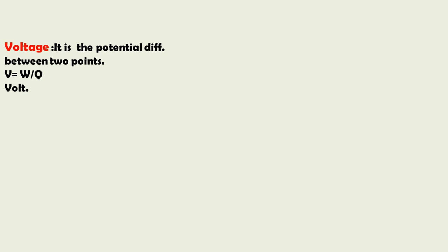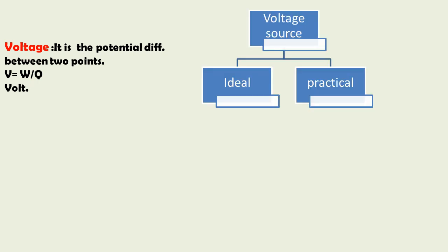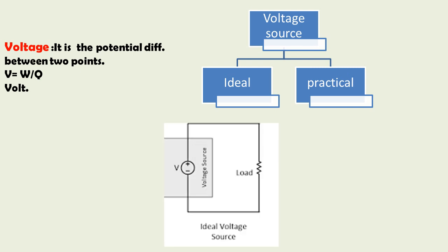Whenever we place a cell in a remote, we always connect positive to positive and negative to negative, due to which there is a flow of current, and it simply provides energy — that term is called voltage. There are two types of voltage source: ideal and practical. For the ideal voltage source, we have a schematic with positive and negative polarity, indicating the direction of current flow, connected to a load — a load can be a battery, LED bulb, or anything else.